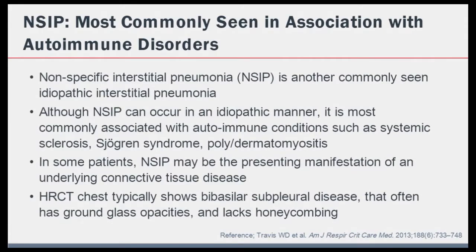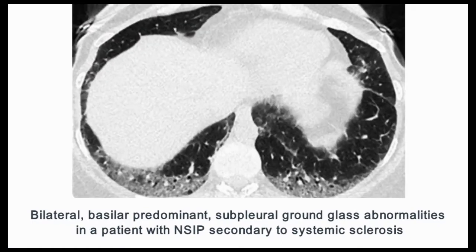Let's talk briefly about non-specific interstitial pneumonia or NSIP. NSIP is a common idiopathic interstitial pneumonia seen most commonly in association with other autoimmune conditions such as scleroderma. In some patients, ILD in the form of NSIP can be the presenting manifestation of an underlying connective tissue disease. The typical HRCT features of NSIP include bibasilar opacities with ground glass attenuation and reticulations, with honeycomb changes typically not present. While the lower lobe predominant ground glass opacities in our case could be consistent with NSIP, the upper lobe predominant pleural involvement and mass-like consolidation are inconsistent with the diagnosis of NSIP.